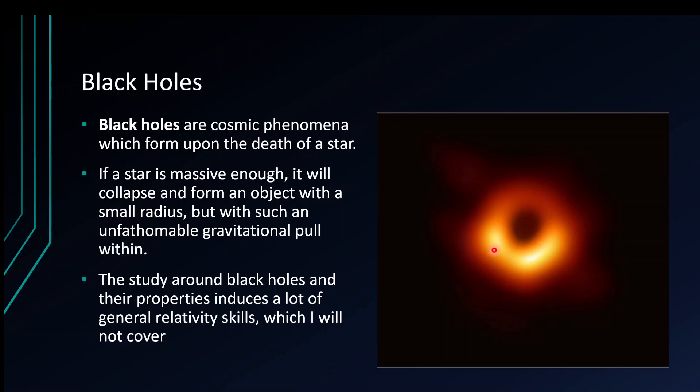A black hole actually forms from the death of a star. Either you can have a nebula, or if the star is massive enough, it can turn into a black hole. It has a small radius, but because there's so much mass in that small radius, the gravitational pull is just utterly immense.